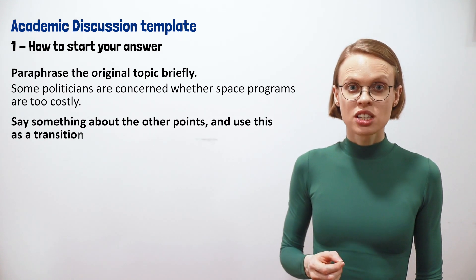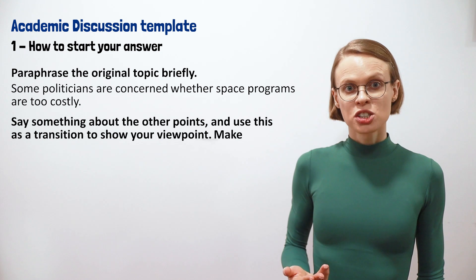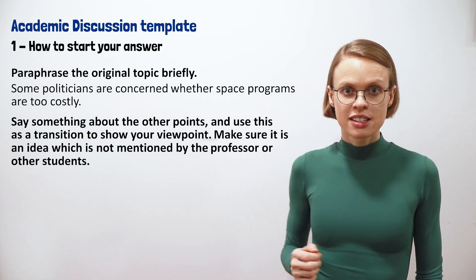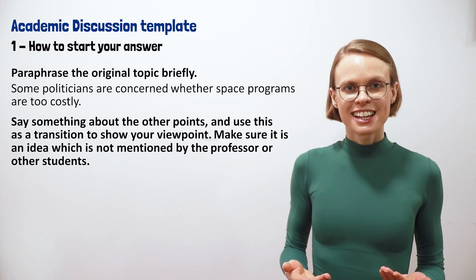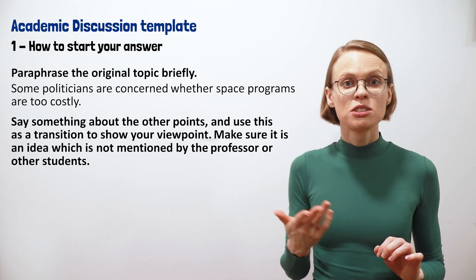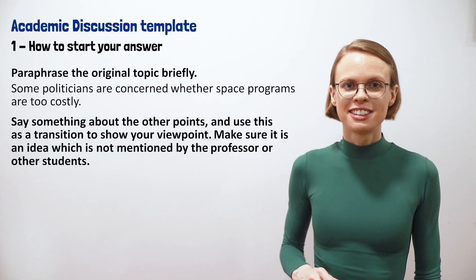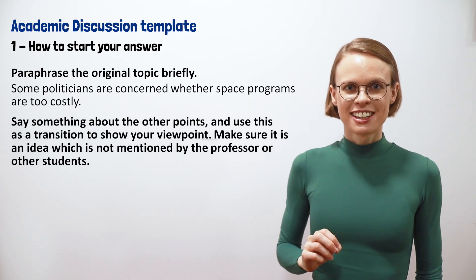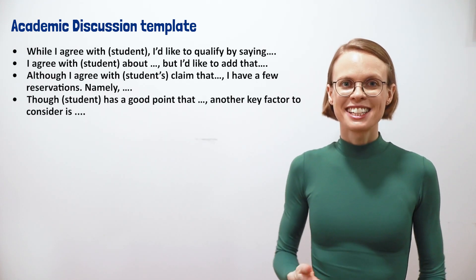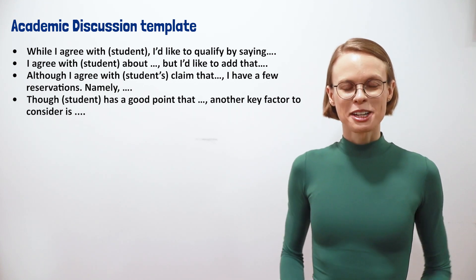The template gives me an awesome pattern for developing my argument, so this is all I need for the start. Then the template says this about the second sentence: say something about the other points and use this as a transition to show your viewpoint. Make sure it is an idea which is not mentioned by the professor or other students. The template gives a list of sentence starters to show how you can achieve the goal of referring to the other points and including your own idea. I've already decided I'm going to build on Rina's idea of the problems on earth, so here are a few awesome sentence starters to do that. Any one of these could create a great sentence.